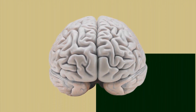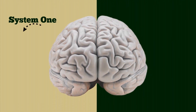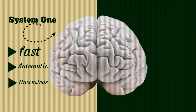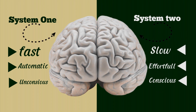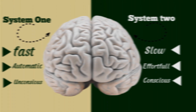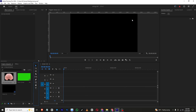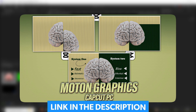Our brains operate in two distinct modes: System One, which is fast, automatic and unconscious, and System Two, which is deliberate and conscious but requires significant effort. Hello everyone — in today's video we'll be creating this motion graphic in Premiere Pro. If you want to create the same in CapCut, I will leave the tutorial link in the description.